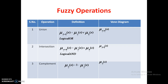Coming to complement, mu A-bar of x is equal to 1 minus mu A of x, because the maximum value in the universe of discourse is 1. So we subtract the membership value from 1 to get A-bar of x. For each and every value we do that to get A-bar for the fuzzy set.